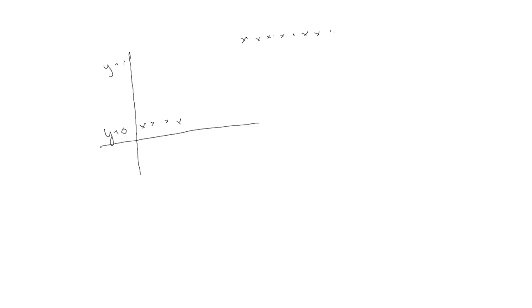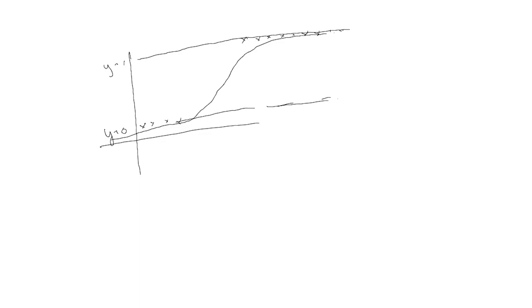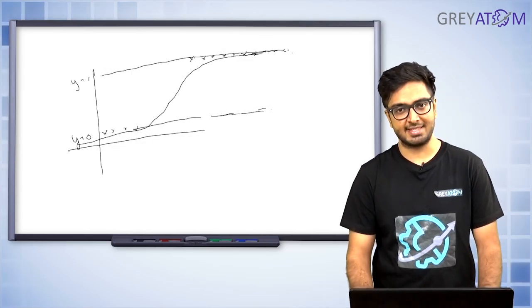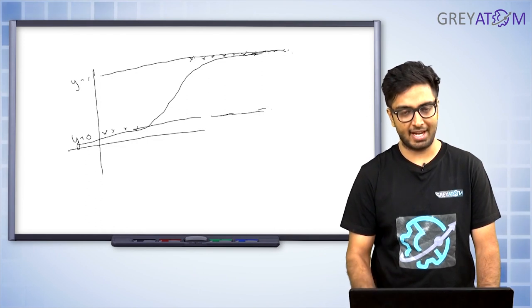S-curve fitting means fitting a curve instead of a straight line — a curve that looks like an S through the data points. The maximum value of this curve is one and the minimum is zero, satisfying the criteria that the final prediction lies between zero and one. It's also robust to outliers — even if we add outliers they won't really affect the predictions because the maximum value it can reach is one. This S-curve is called the sigmoid function.